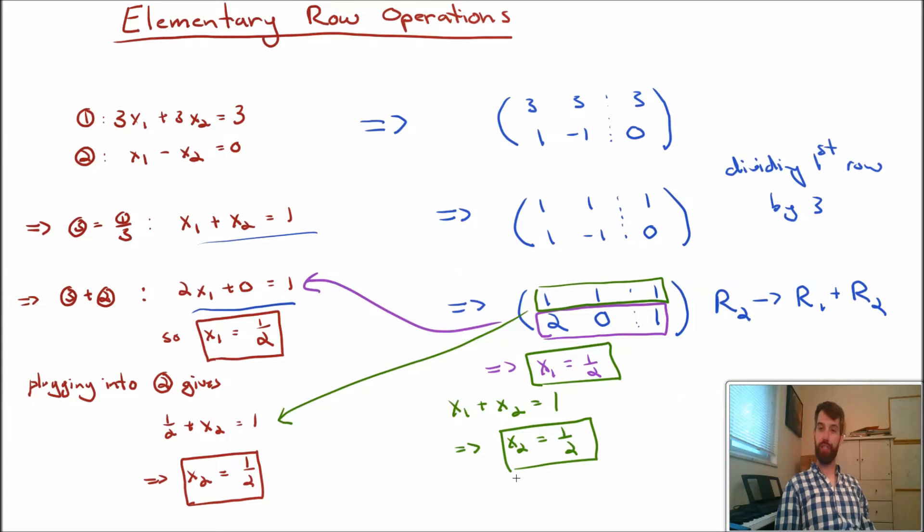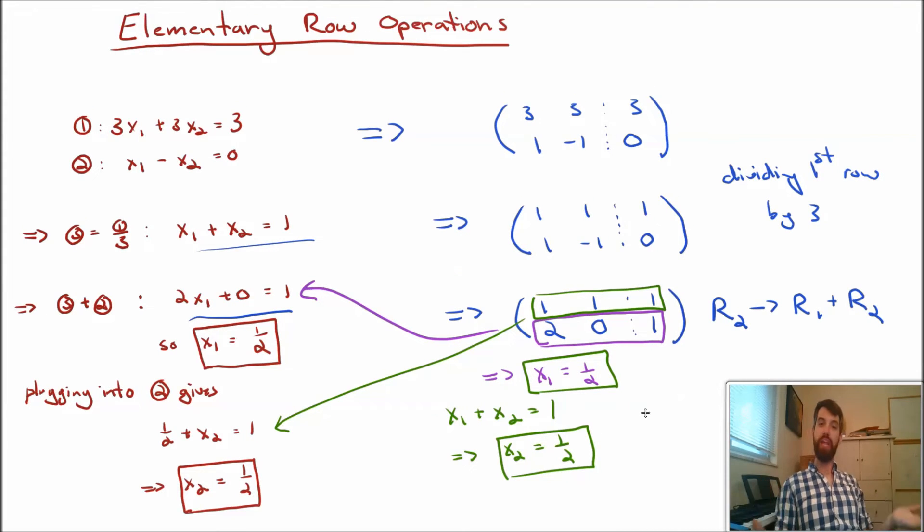Now this might not actually seem like I'm doing much. It's really the exact same thing, but just a new notation. It's going to be the efficiency, when these get really large and cumbersome, that's going to give us the benefit. And indeed, we're going to come up with a systematic method of how we do these manipulations on the right-hand side that's going to allow us to find these solutions to these systems if they exist. Now as I was doing this, I did a bunch of different manipulations.